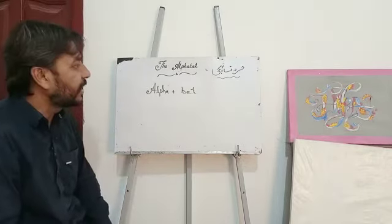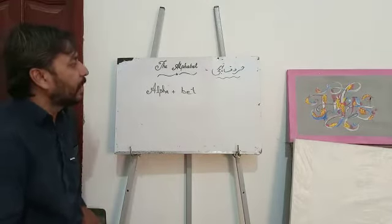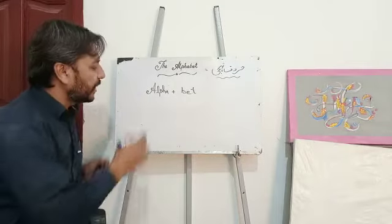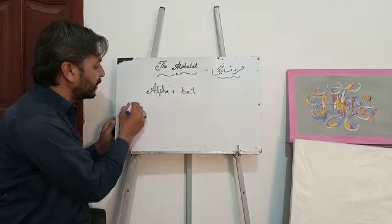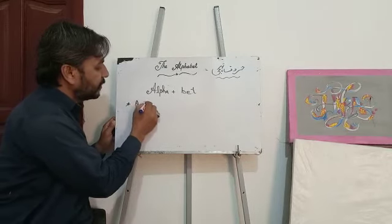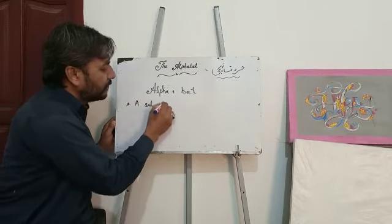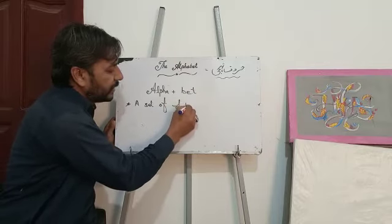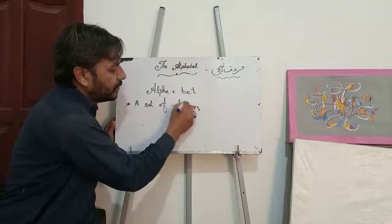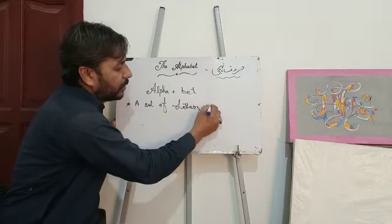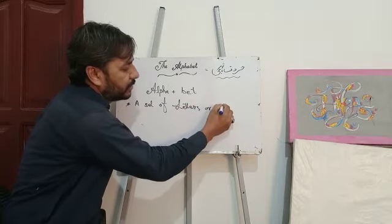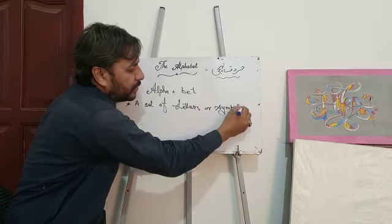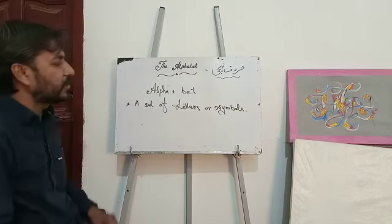Now we come to the English language. What is an alphabet? An alphabet is a set of letters and symbols — a set of letters and symbols.